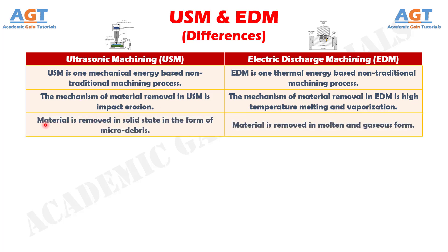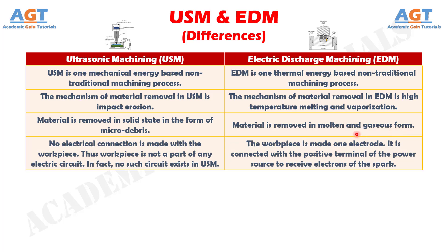Difference number 3: In ultrasonic machining, material is removed in solid state in the form of micro-debris, whereas in electric discharge machining, material is removed in molten and gaseous form. Difference number 4: In ultrasonic machining, no electrical connection is made with the workpiece; thus the workpiece is not part of any electric circuit — in fact, no such circuit exists in ultrasonic machining. Whereas in electric discharge machining, the workpiece is made one electrode and is connected with the positive terminal of the power source to receive electrons of the spark.